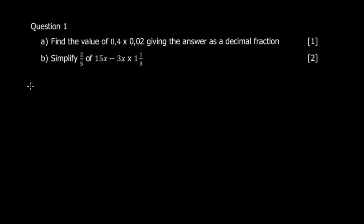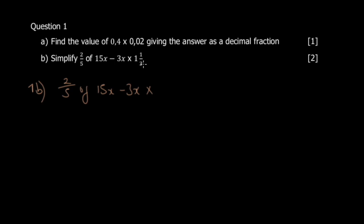Moving to question 1b: simplify 2/5 of 15x minus (1⅓) × 3x. First, convert the mixed number to an improper fraction: 1⅓ becomes 4/3. Then remember that 'of' means multiply, so 2/5 of 15/x means 2/5 × 15/x. That gives us clarity before we apply the order of operations.